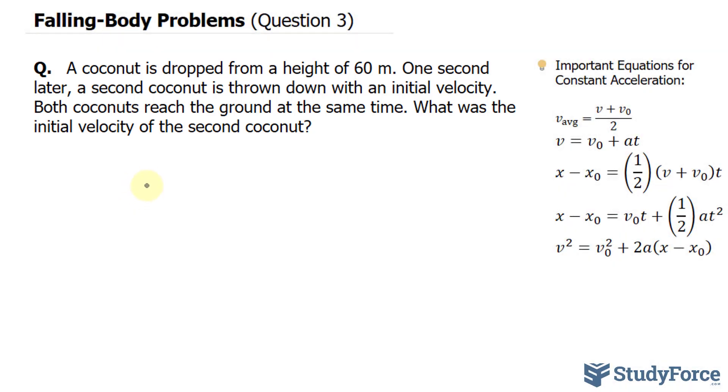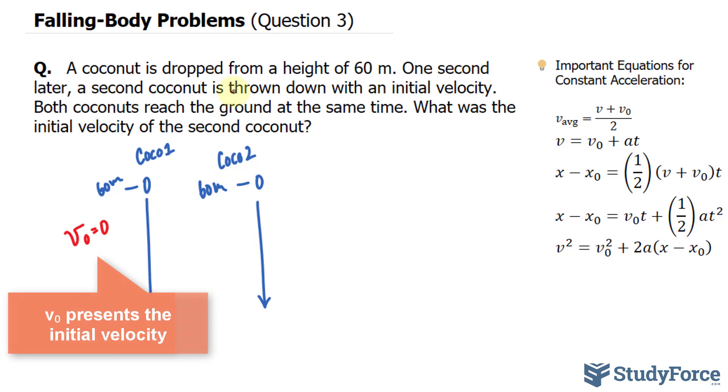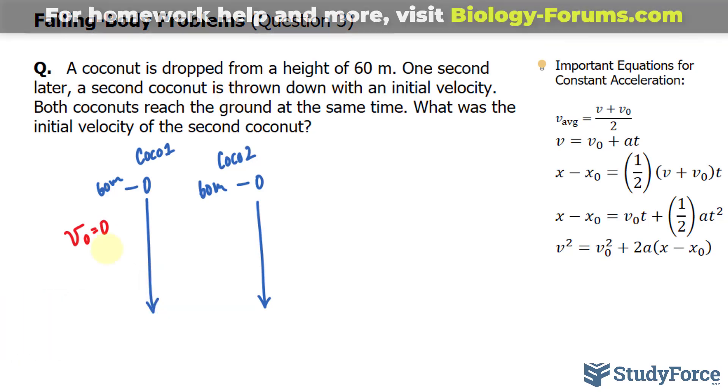Let's begin with an illustration. So originally we have coconut one that is thrown from a height of 60 meters down. Then one second later, we have a second coconut that is thrown with an initial velocity at the height of 60 meters and it reaches the ground the same time that coconut one was thrown a second before. From this question we can tell that coconut one has an initial velocity of zero, because the question makes it known that the second coconut is thrown down with an initial velocity.